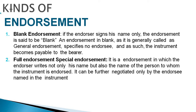Next is full endorsement, also called special endorsement. It is an endorsement in which the endorser writes not only his name but also the name of the person to whom the instrument is endorsed. It can be further negotiated only by the endorsee named in the instrument. In blank endorsement there was no endorsee name specified, but in full or special endorsement, both the signature of the endorser and the endorsee name are specified. The person named in the instrument — the endorsee — has the right to further transfer that negotiable instrument.